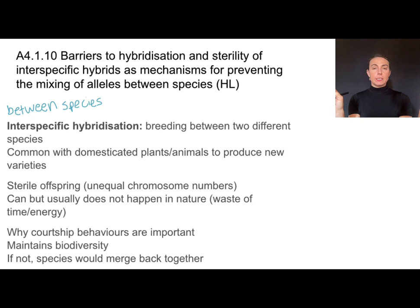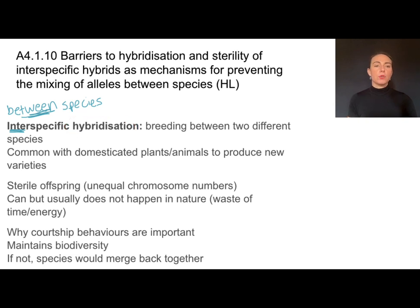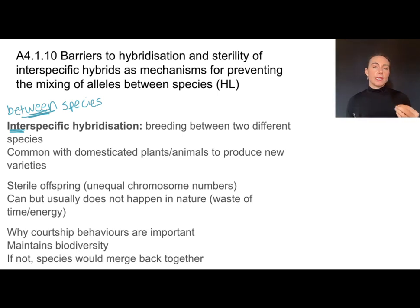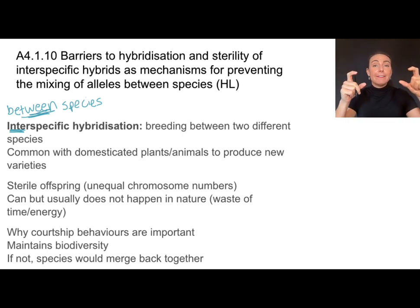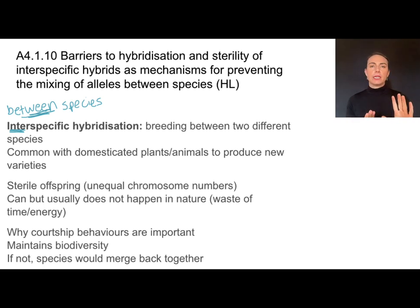Speciation produces different species, but what prevents those species from merging back together? When species merge, we call this interspecific hybridization — breeding between two different species. This is common with domesticated plants and animals to produce new varieties. However, most of these hybrids, if they're truly different species, are going to produce sterile offspring. Remember, the definition of a species is being able to produce fertile offspring. In nature, it would be a waste of time and energy to mate with something only to have offspring that cannot reproduce.